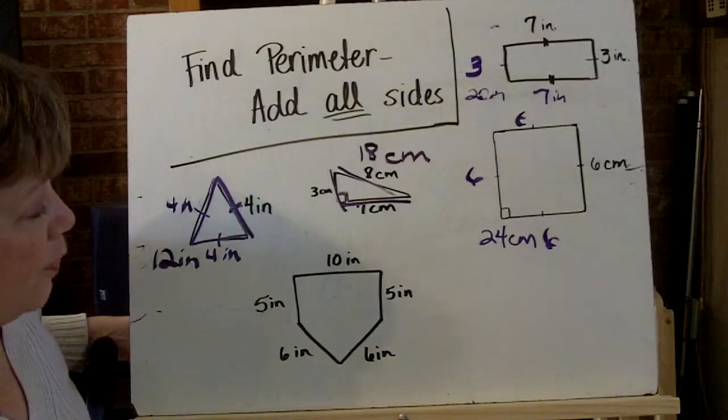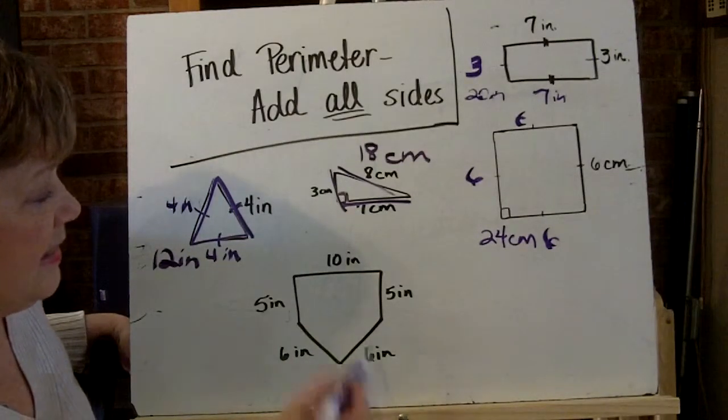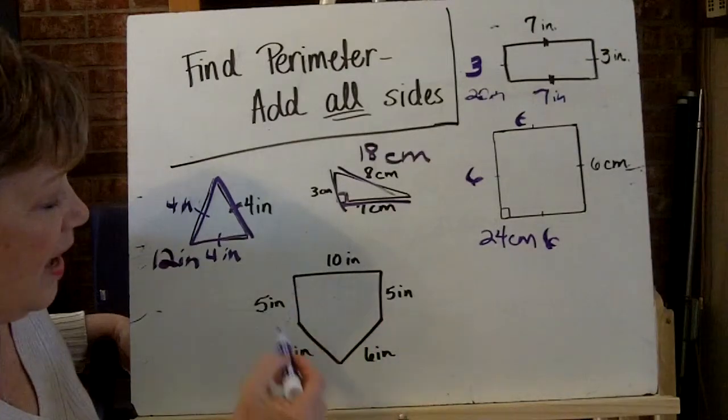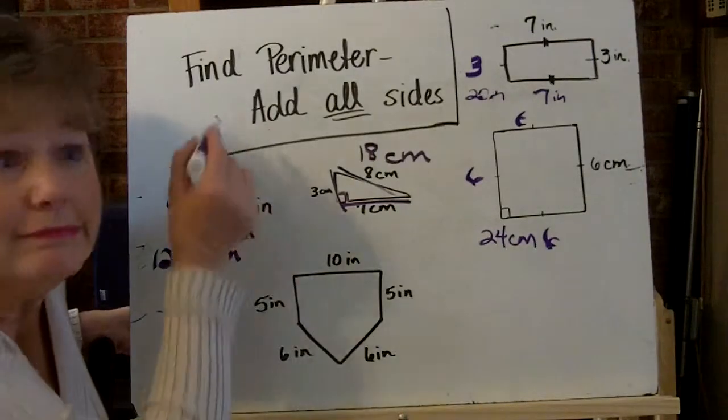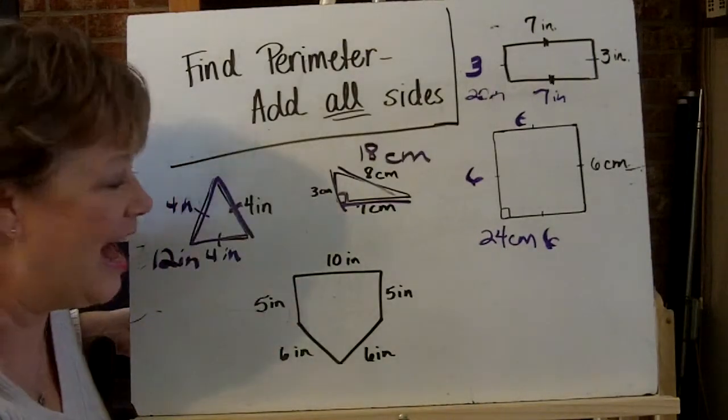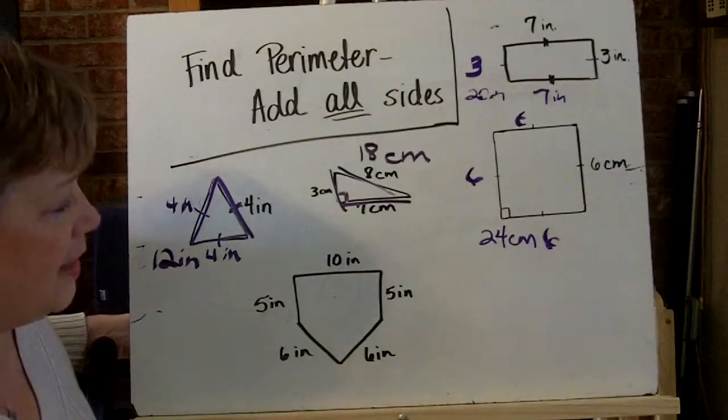The last example we're going to look at is this pentagon. And it is 10 inches by 5 and 5, 6 and 6. So the rule is what? Add all the sides. So I'm simply going to add all 5 of these numbers.